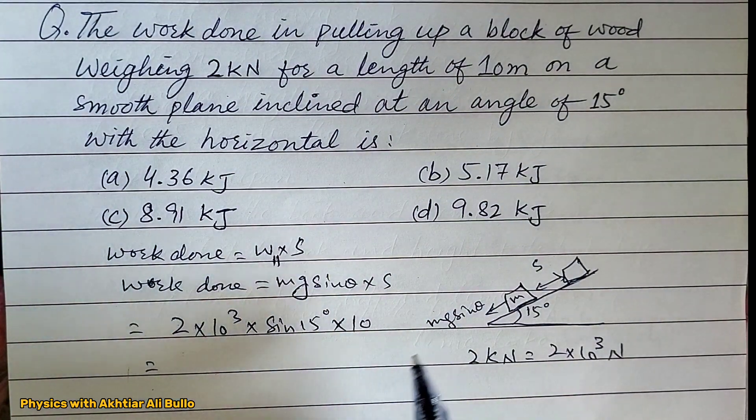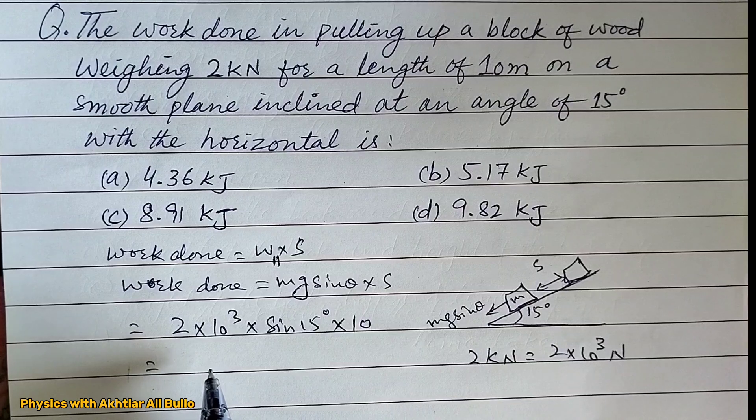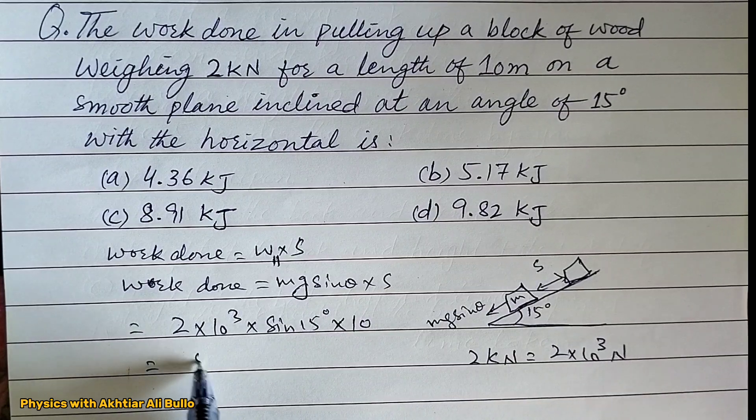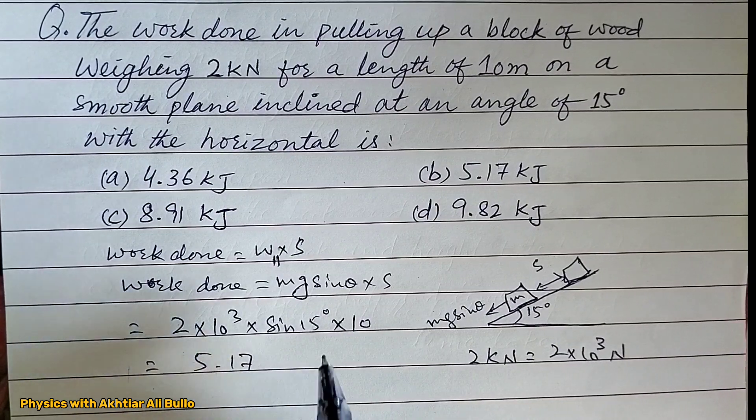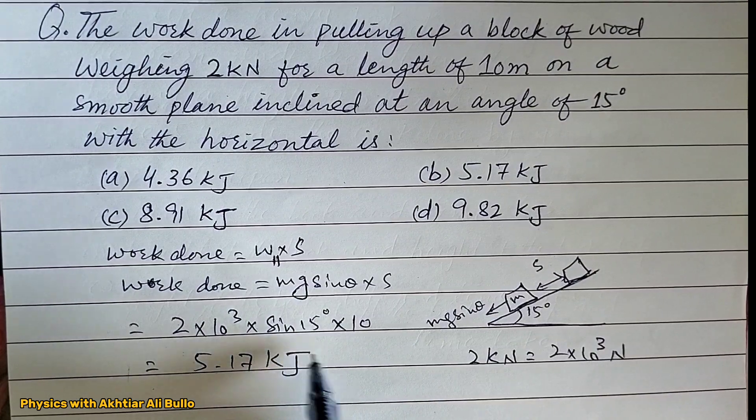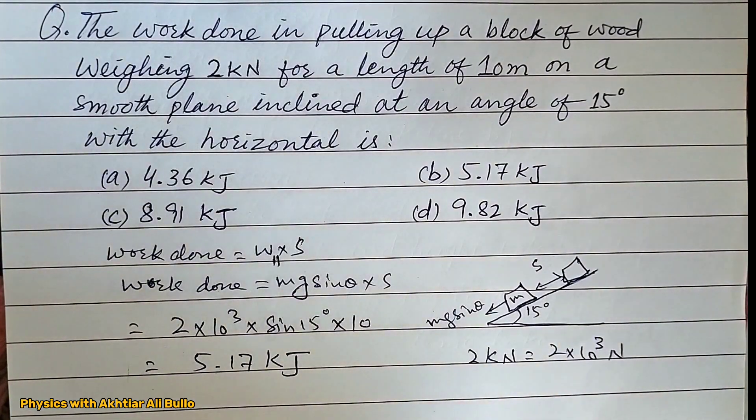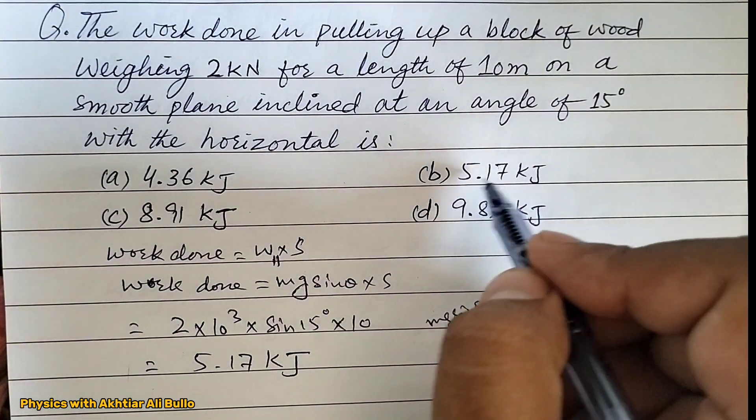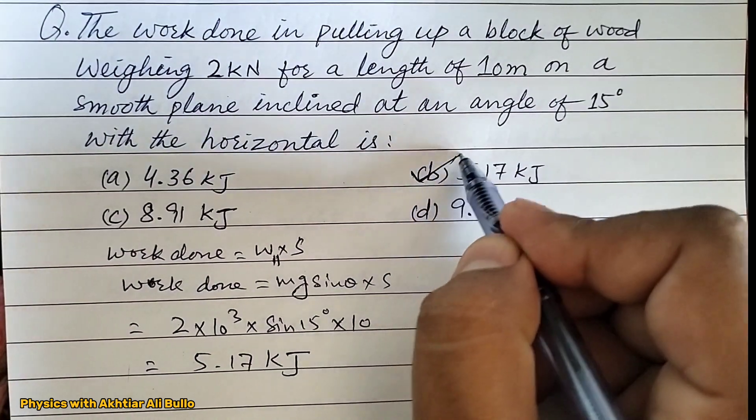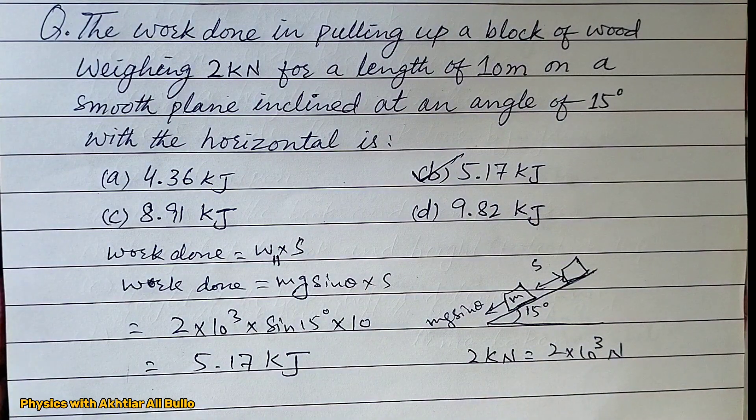After simplification, we will obtain the work done as 5.17 kJ. So the correct option will be (b) 5.17 kJ.